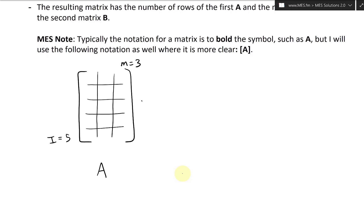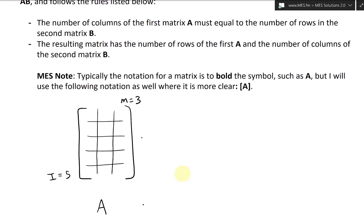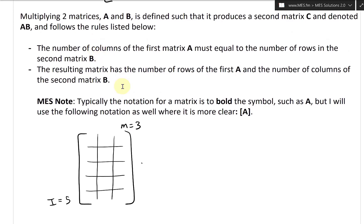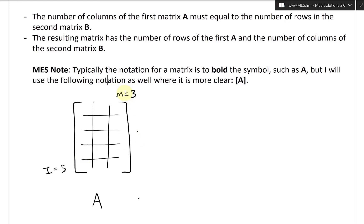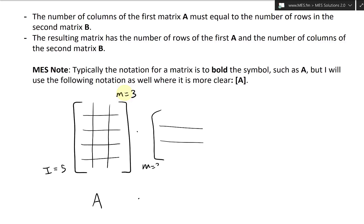Looking at the first rule: the number of columns of the first matrix A must equal the number of rows of the second matrix B. So M equals three means we need three rows in matrix B. So we'll have three rows for the second matrix B; otherwise we can't multiply according to our definition. We'll also call this M equals three.